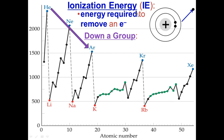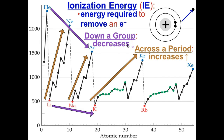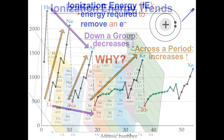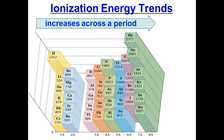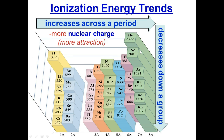Ionization energy is the energy required to remove an electron. It decreases down a group and increases across a period from left to right. Looking at a diagram, the height represents the energy needed. Across a period, more protons are added as we move from lithium to neon, so there is more nuclear attraction — the nucleus holds on to those electrons more tightly.